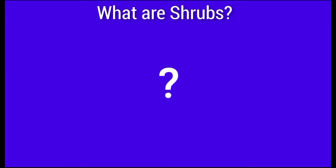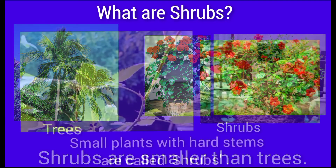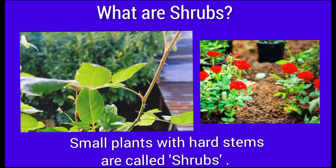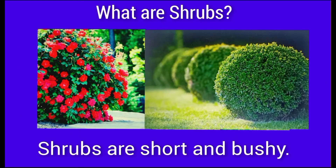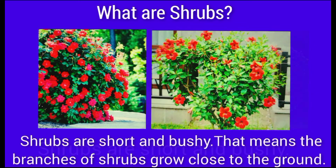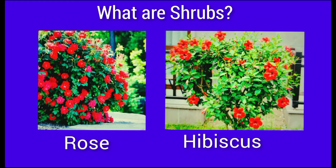What are shrubs? Shrubs are smaller than trees. Small plants with hard stems are called shrubs. Shrubs are short and bushy, meaning the branches of shrubs grow close to the ground. Examples of shrubs are rose and hibiscus.